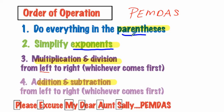First, we would always do anything inside the parentheses — you have to do that first. Then you would simplify exponents; if something was like 5 to the third power, you would want to simplify that first. Third, you would do any kind of multiplication and division, whichever comes first in the problem — left to right. Then the very last thing you would do is any addition or subtraction, whichever comes first in the problem. So this mnemonic — Parentheses, Exponents, Multiplication, Division, Addition, Subtraction.